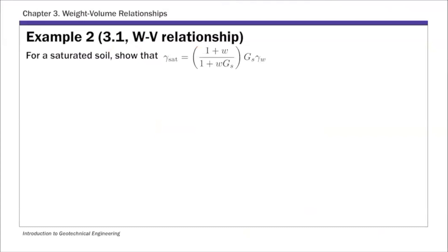This example is a bit different from the previous one. In example two, instead of calculating numbers, we're going to derive a relationship between gamma saturated, water content, GS, and unit weight of water. The approach is: given water content, specific gravity, and unit weight of water, we are going to find gamma saturated.